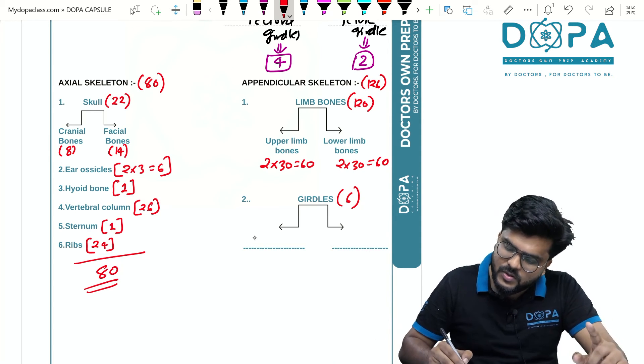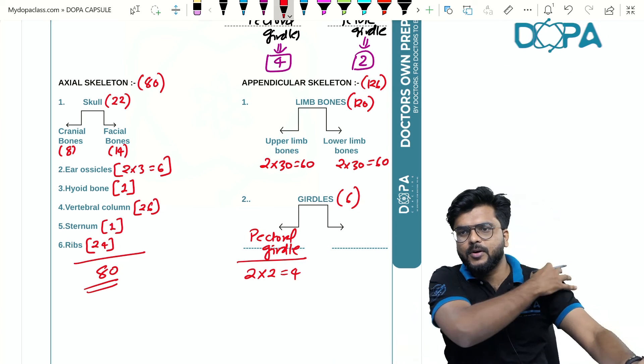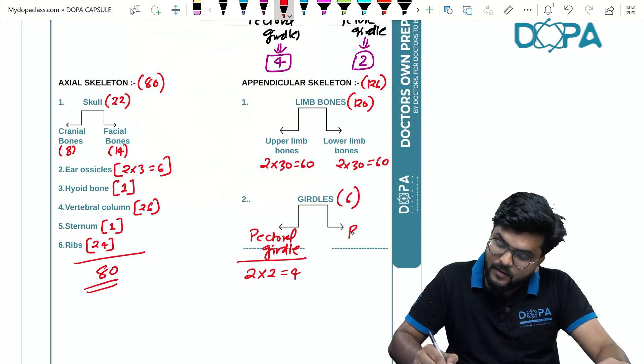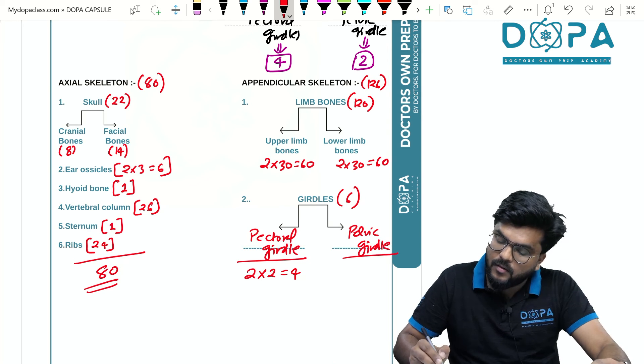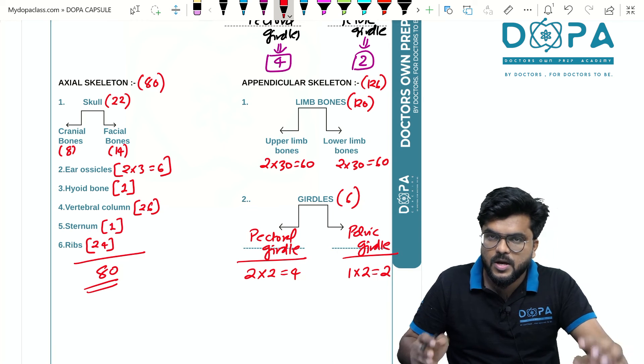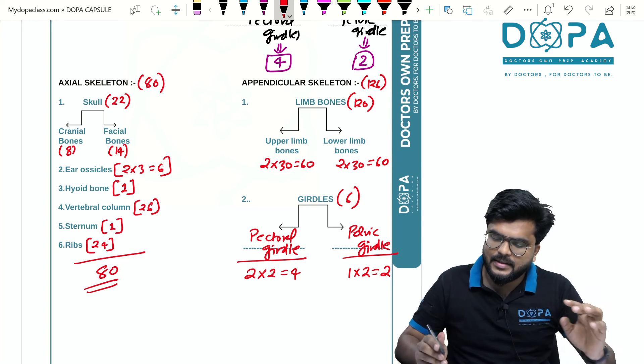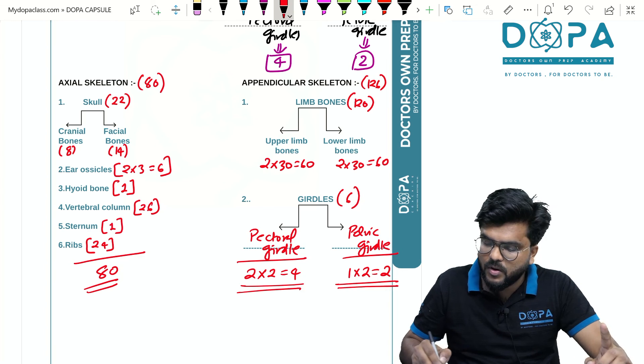In the girdles, as I have already told, we have pectoral girdle where we have 2 into 2 equals 4: 2 bones here and 2 bones here. In the pelvic girdle, we have 1 into 2 equals 2 bones, one bone on either side that is simply called coaxial bone. We will be entering into the individual bones in the next session.